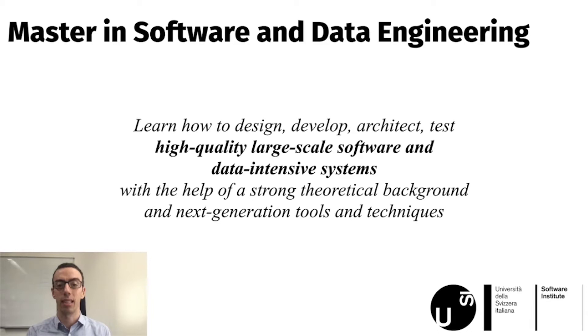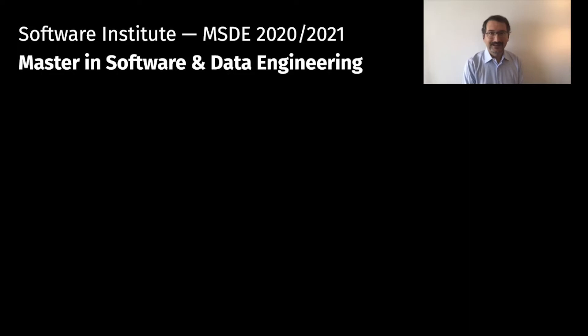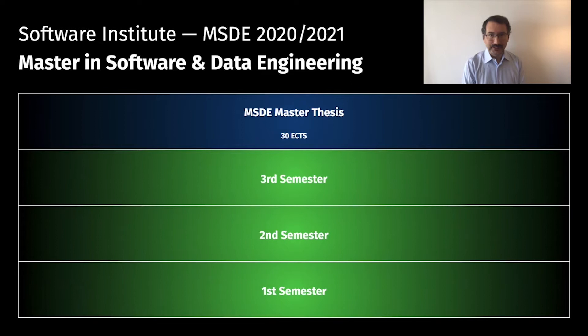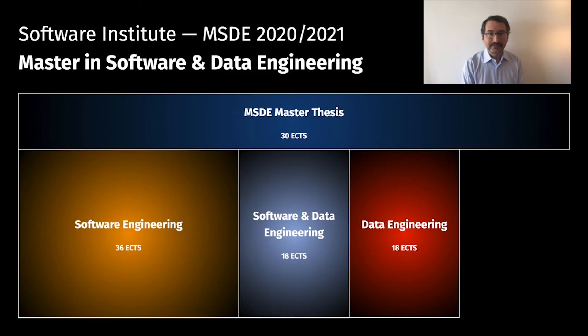That is the goal of our master. Now Professor Pautasso will show you the study program. Let's take a look at the structure, which spans two years. The last semester is entirely dedicated to the master thesis. Lectures in the first three semesters are organized into a software engineering pillar, a data engineering pillar, and software and data engineering ateliers.